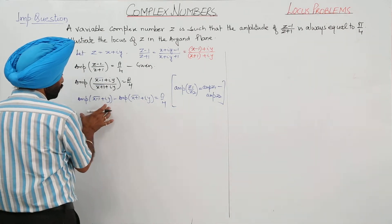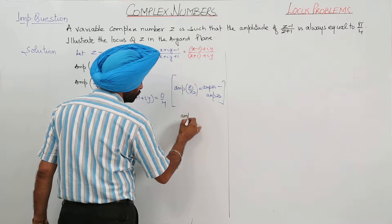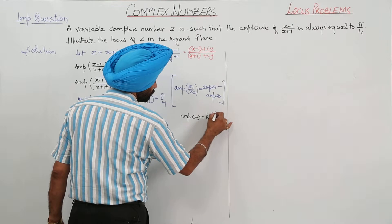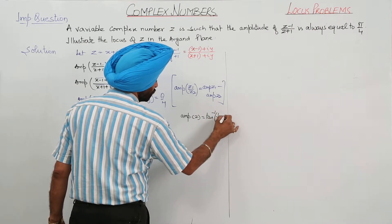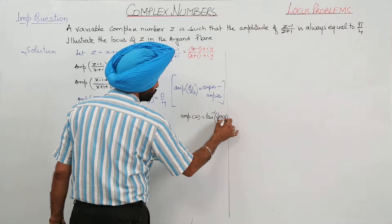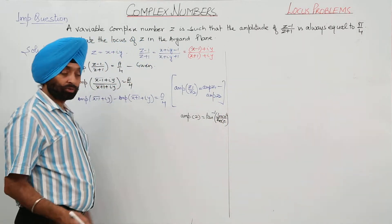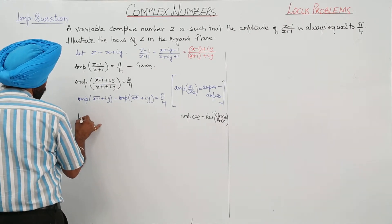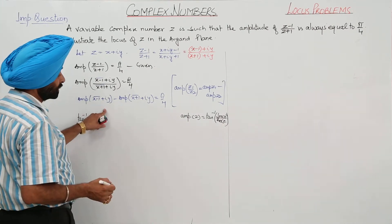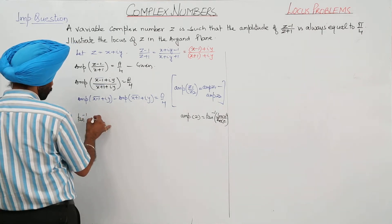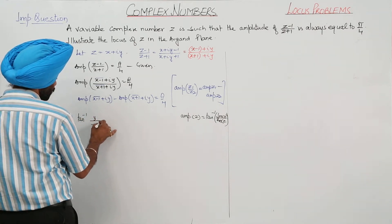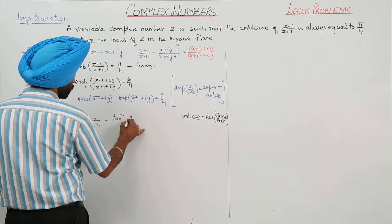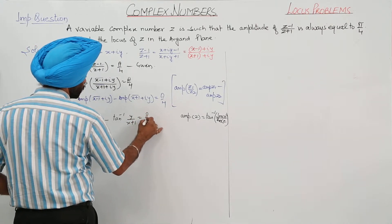The amplitude of a complex number is written as tan inverse of (imaginary part upon real part). Using this, we get: tan inverse (y upon x minus 1) minus tan inverse (y upon x plus 1) equals π/4.